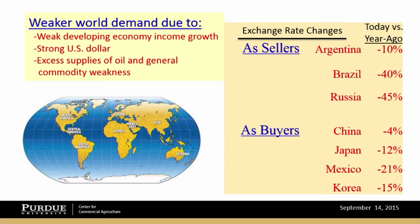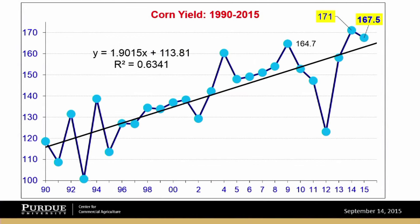So to summarize: growing worldwide supplies across all these commodities, maybe just a little bit of tightening on the corn side, a weak demand picture — that doesn't set a very good stage for U.S. commodity prices over the next growing season. That paints a picture of lower prices. Let's take a look at some of the data USDA released Friday — their updated production estimates, yield estimates, and supply and demand estimates.